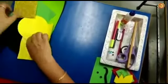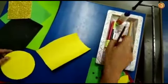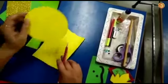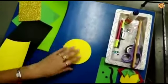Now first of all, cut a circle from the yellow sheet like this.